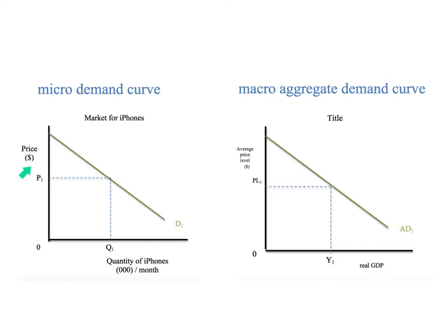the macroeconomic aggregate demand curve has a measure of the average price level for all goods and services in the country. And likewise, where the microeconomic demand curve has the quantity — in this case for iPhones — of one good, the macroeconomic demand curve has the total quantity of all goods and services, which is national output, which can also be expressed as real GDP. Thus, the aggregate demand curve shows the relationship between the average price level and real output.